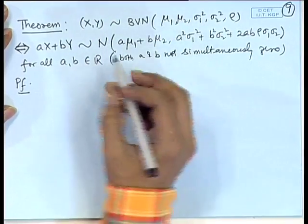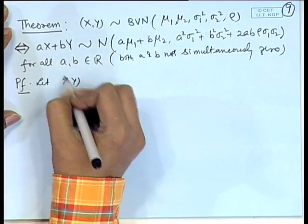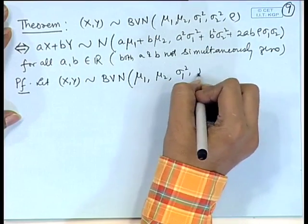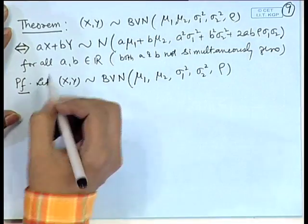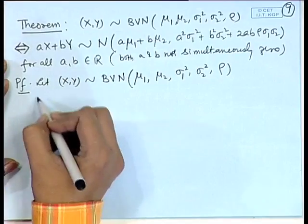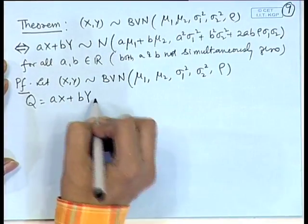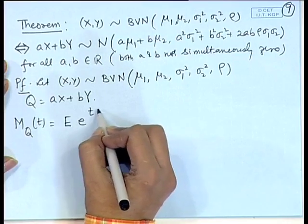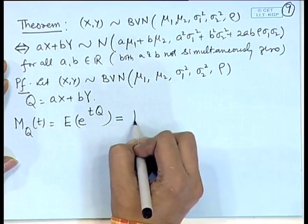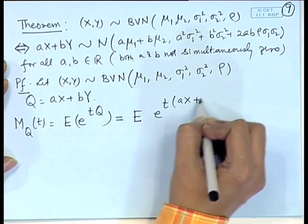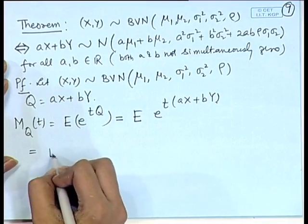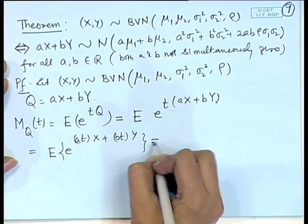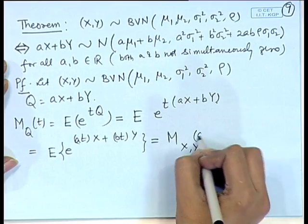In order to prove this statement, let X, Y have the bivariate normal distribution with parameters mu_1, mu_2, sigma_1 squared, sigma_2 squared, and rho. Let Q = AX + BY. Then the moment generating function of Q equals E[e^{tQ}] = E[e^{t(AX + BY)}] = E[e^{ATX + BTY}], which is the joint MGF of X, Y evaluated at (AT, BT).